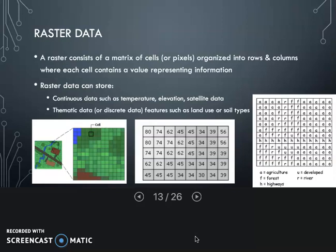Raster data can store a variety of different types of information. It's particularly valuable for continuous variables - things like temperature, elevation, satellite data, reflectance values from the earth, these types of things that are constantly varying at every single point on the planet. There's not a discrete or hard edge to them. But raster data can also store things like thematic data for discrete features quite well, such as land use or soil types.